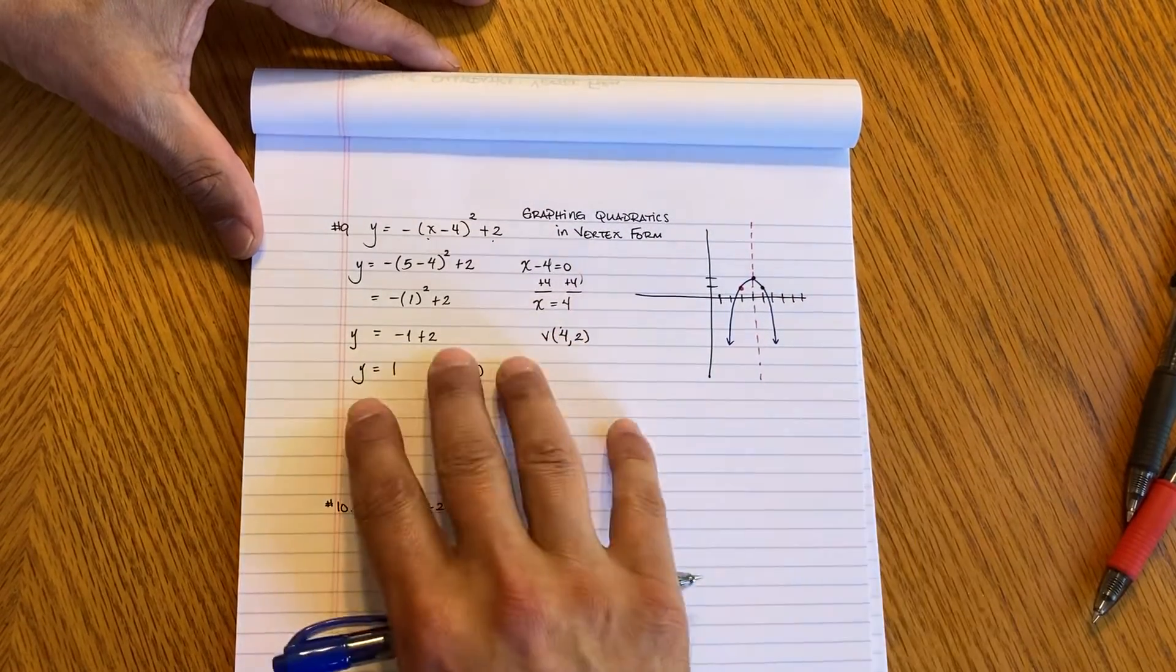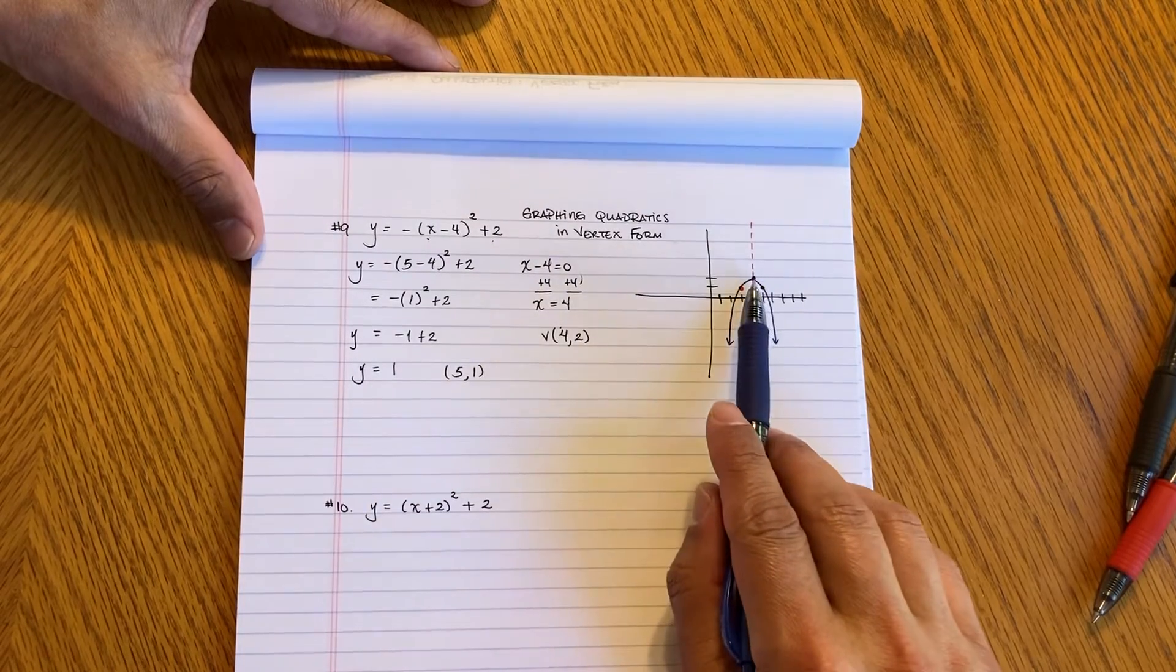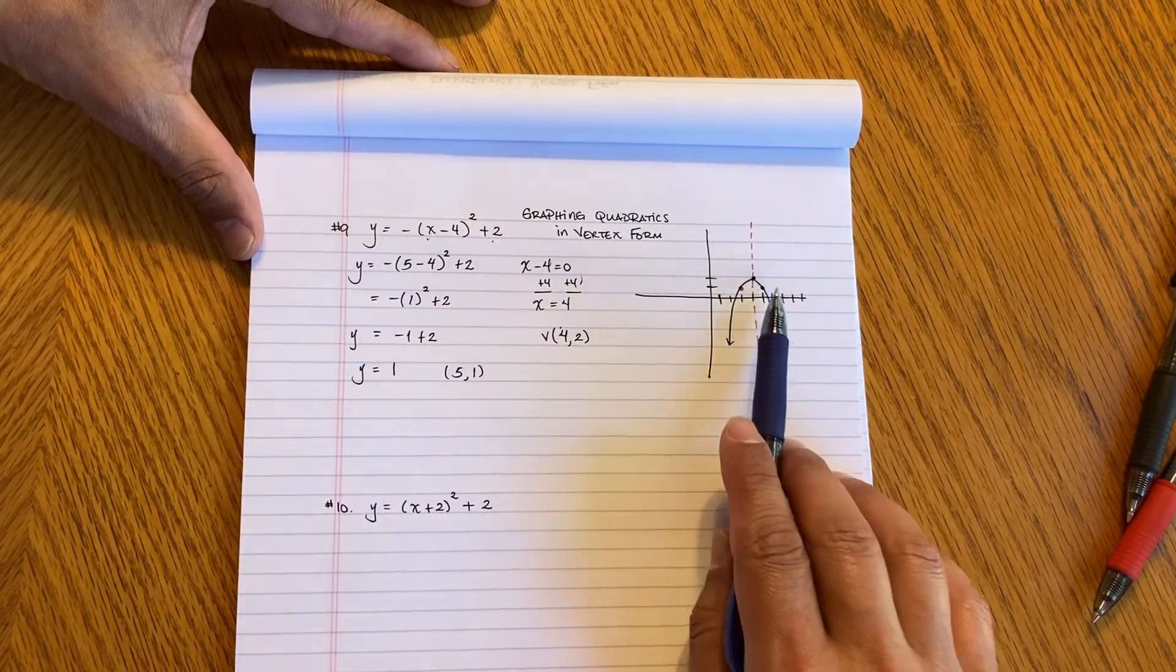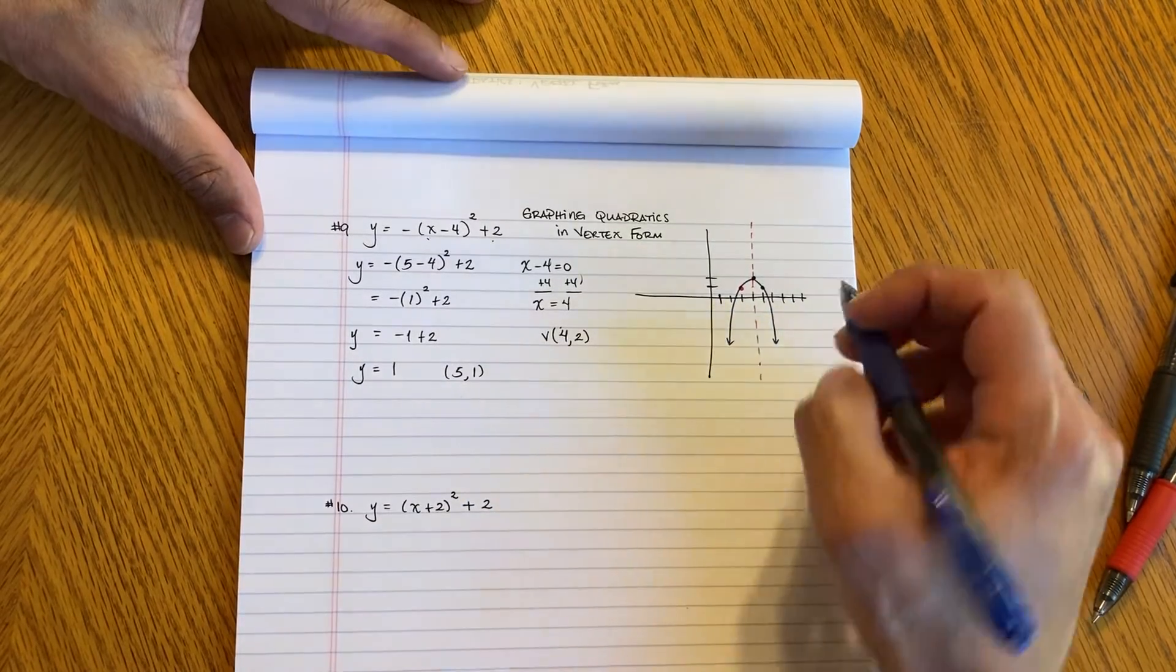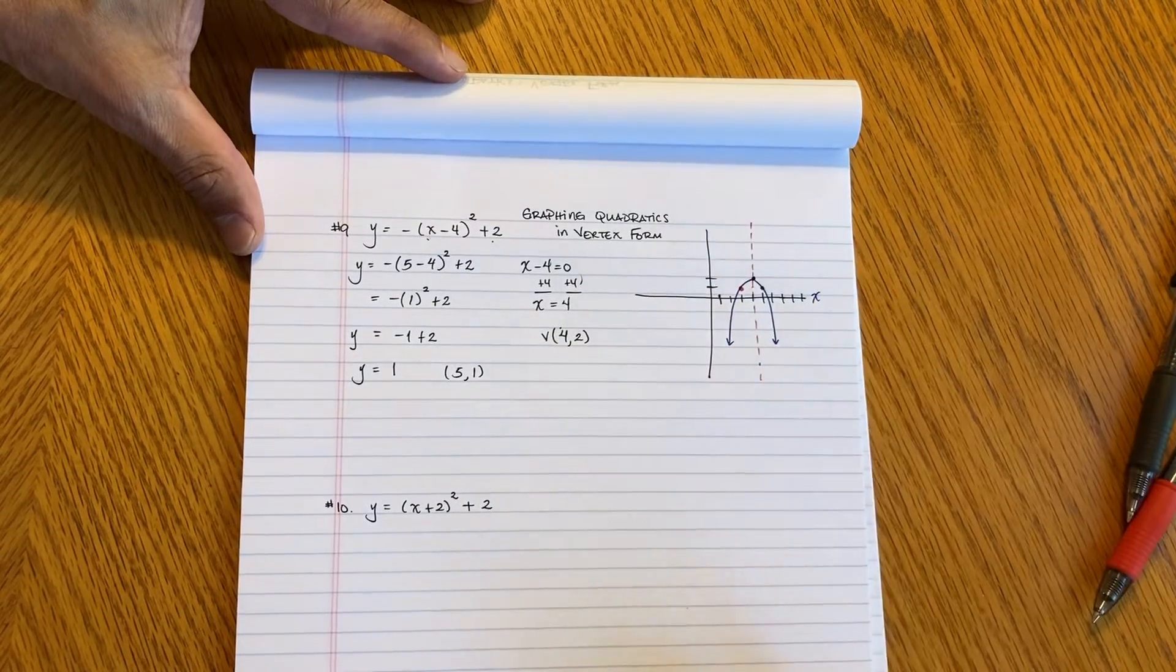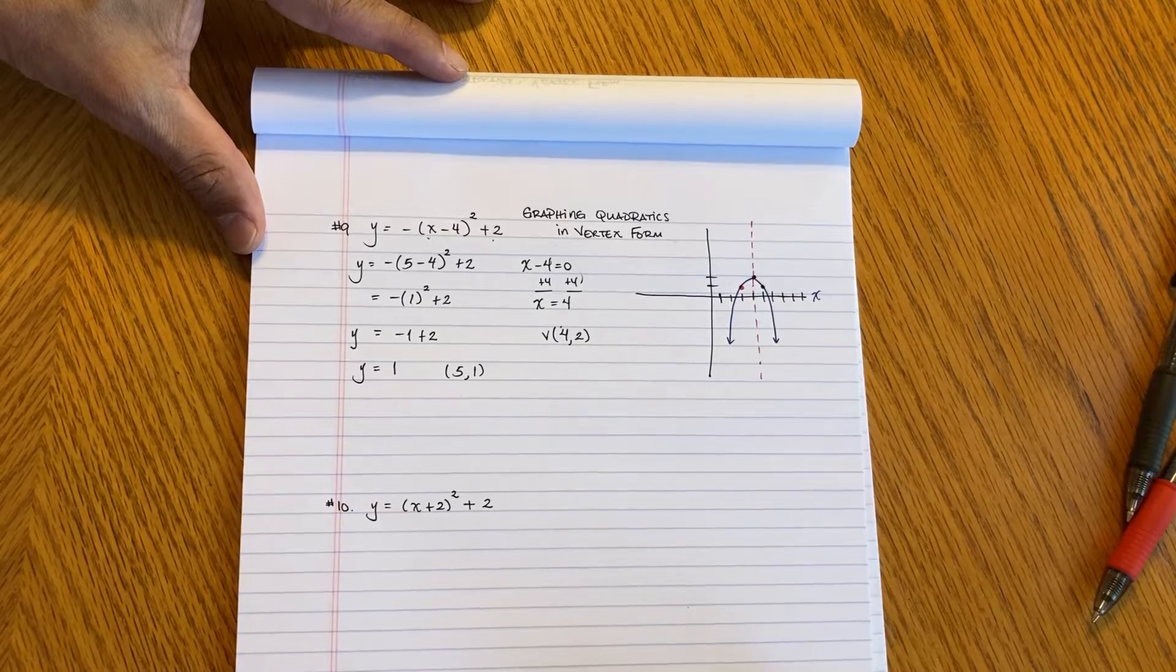So the essence of the vertex form, you're focusing on making sure you know the vertex. And just one additional point and you're going to use the line of symmetry. You're not really focused on where it crosses the x-axis. Let's go ahead and do another one.